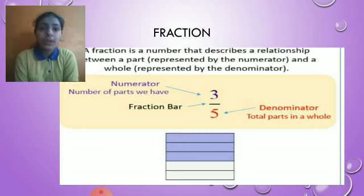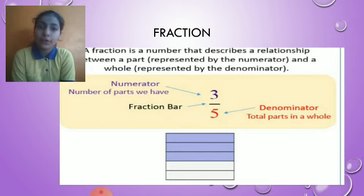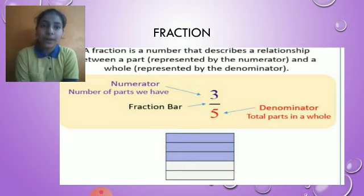Numerator is the number of parts we have, and denominator is the total parts in a whole. For example, 3 by 5. Total parts in a whole we have 5, and number of parts we have 3, so the fraction will be 3 by 5.